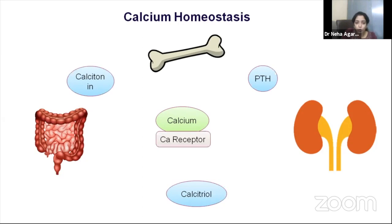The calcium sensing receptor senses serum calcium and signals PTH to shut down when calcium is high, and triggers PTH secretion and production from the parathyroid glands when calcium is low. There can be disorders affecting calcium receptors — such as activating or inactivating mutations — which will be discussed further with clinical cases.